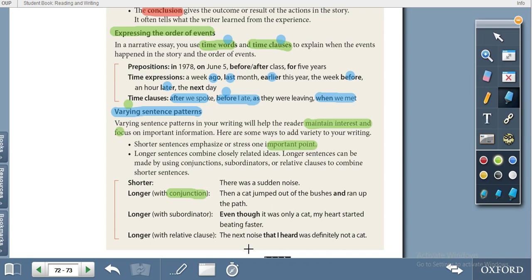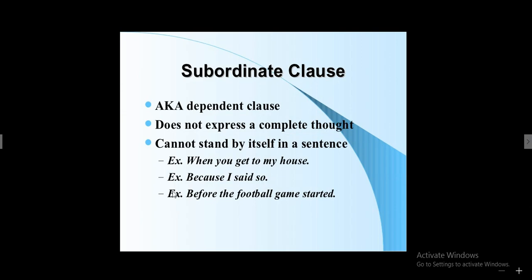Then we have subordinators. Subordinators are words or groups of words used with dependent clauses. For example: 'when you get to my house' — this subordinate clause doesn't express a complete thought and cannot stand by itself. Examples of subordinators are: when, because, and before. These clauses give full meaning only when connected to an independent clause.